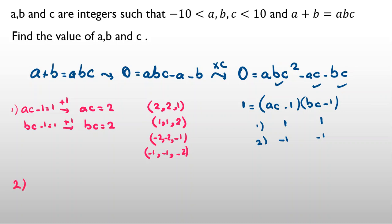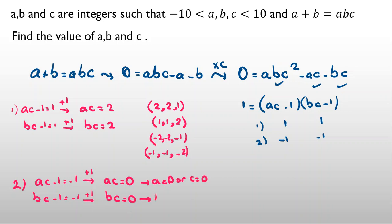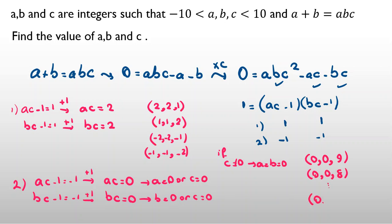In case two, A·C minus one equals negative one and B·C minus one equals negative one. Adding one to both sides, A·C equals zero and B·C equals zero. So A is zero or C is zero, and B is zero or C is zero. If C is not zero, then A and B must both be zero. So we have these cases: (0, 0, 9), (0, 0, 8) and so on — 18 answers total since C is not zero.